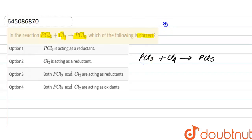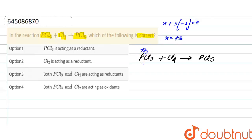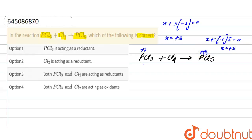Suppose the oxidation number of phosphorus is x. In PCl₃, there are three chlorine atoms each with oxidation number minus one, so the oxidation number of phosphorus is plus three. In PCl₅, x plus (minus one times five) equals zero, so the oxidation number of phosphorus is plus five.